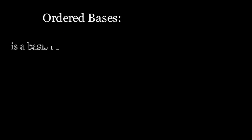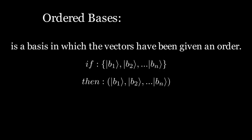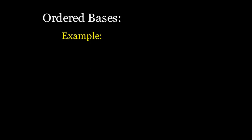Now let's look at what ordered basis means. An ordered basis is a basis in which the vectors have been given an order — there is a first vector, a second vector, and so on. If you have vectors b₁, b₂, …, bₙ as a basis, we denote the ordered basis by (b₁, b₂, …, bₙ) using round brackets. For example, the standard basis {|0⟩, |1⟩} as a set equals {|1⟩, |0⟩}, but the ordered basis (|0⟩, |1⟩) is not equal to the ordered basis (|1⟩, |0⟩).